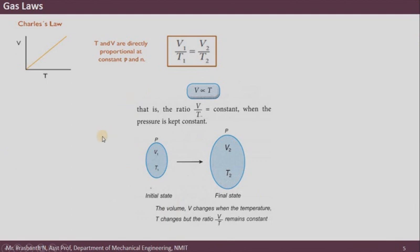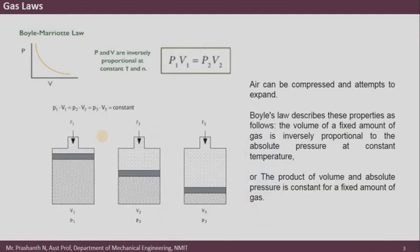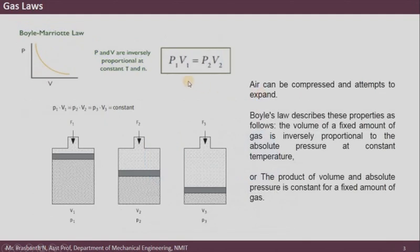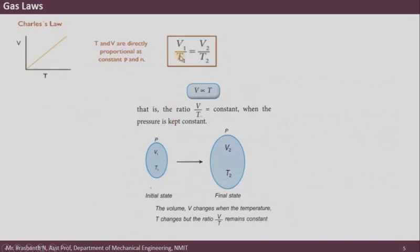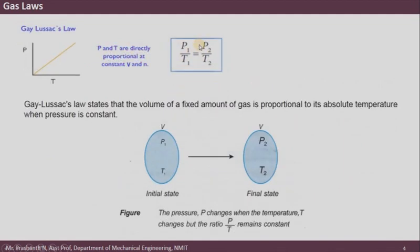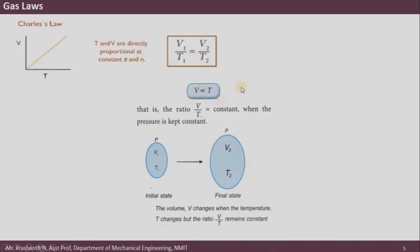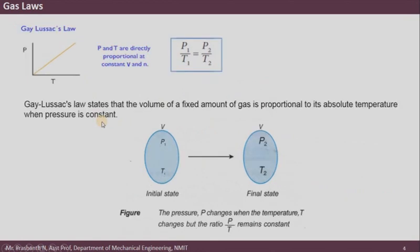These three laws — Charles' law, Gay-Lussac's law, and Boyle-Marriott law — can be combined to form the general gas equation, which is mathematically expressed as: P1V1/T1 = P2V2/T2.